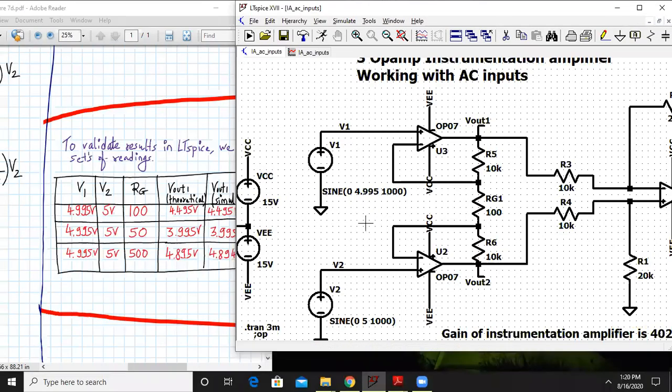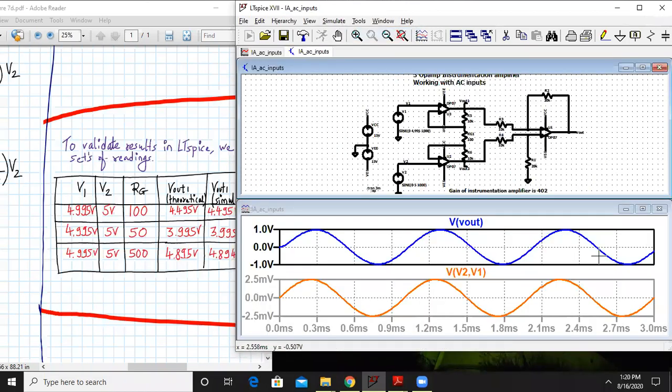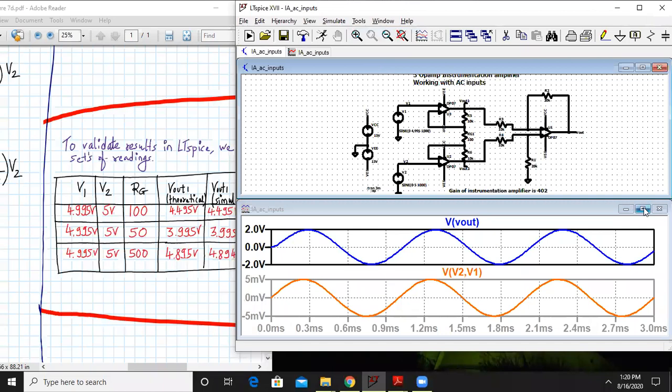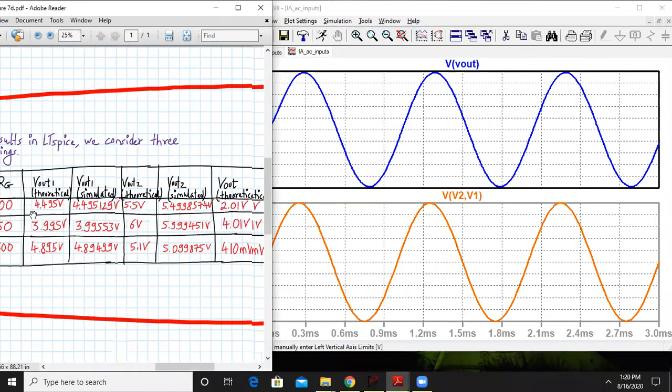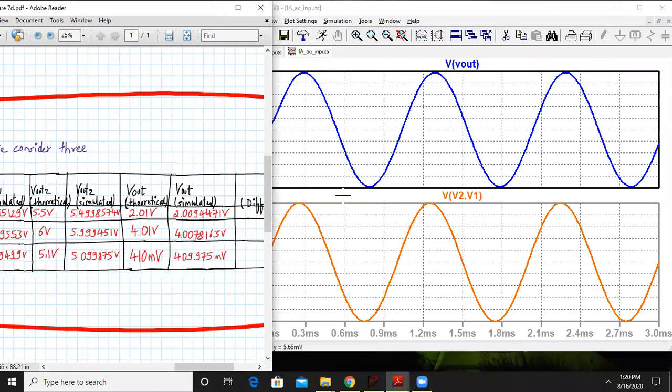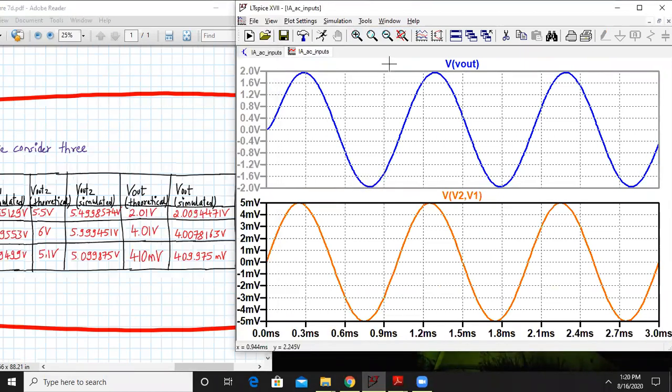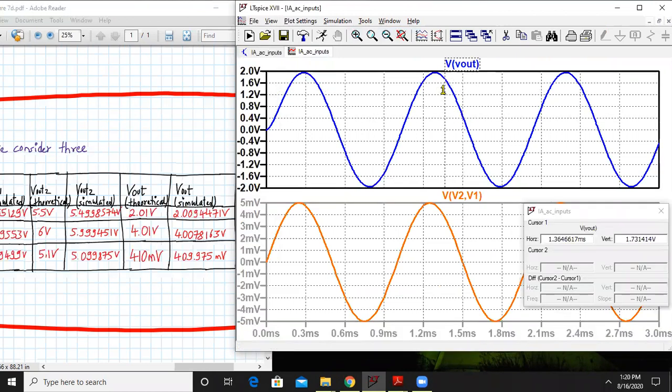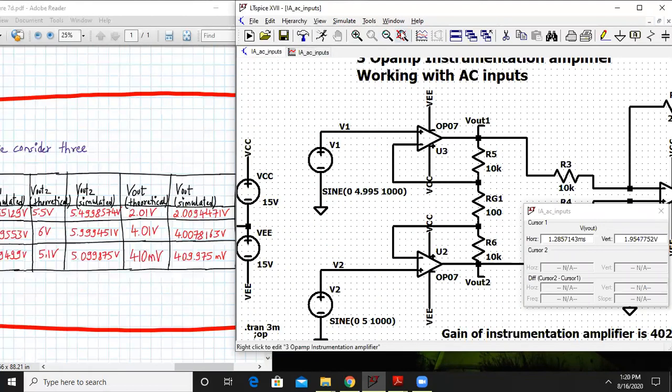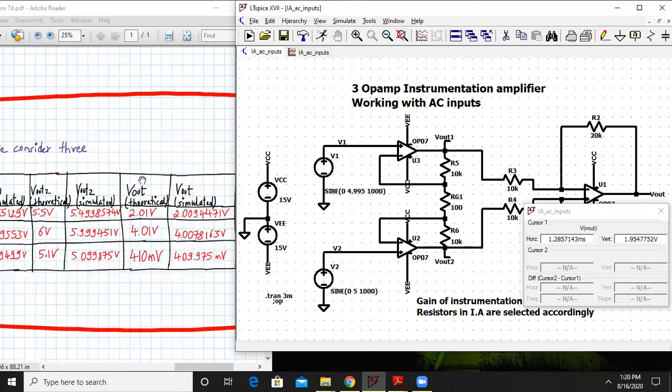Now let's try to give the peak value same as V1 and V2 over here and check the output. We should get around 2 volts. As you can see we are getting close to 2 volts positive, and on the negative side also close to minus 2. Let me just confirm it once. It's not exactly 2, it's 1.954. So with AC we are getting the simulated value as 1.954 and theoretically 2.01. So that proves that the instrumentation amplifier works well with AC inputs also.